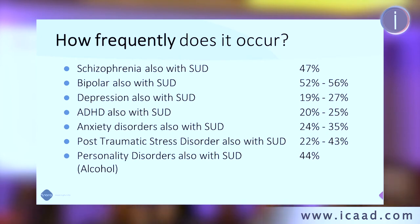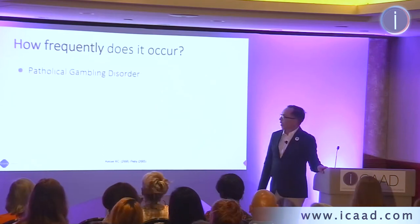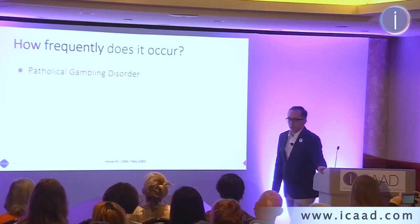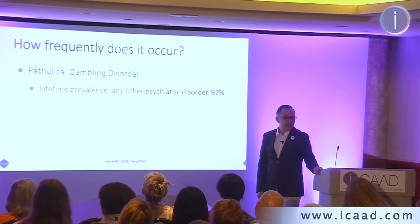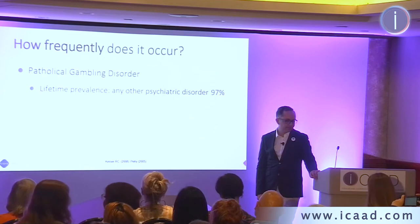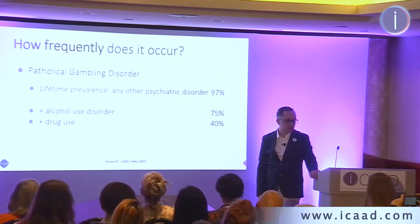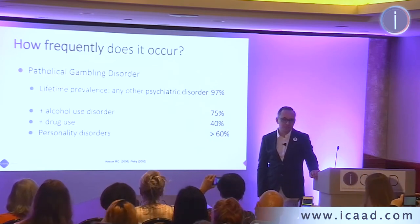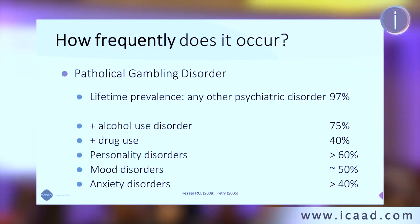What about behavioral addictions? Looking at just one example — pathological gambling disorder: the lifetime prevalence of having any other psychiatric disorder with pathological gambling is 97%. Chances of having alcohol use disorder: 75%. Drugs: 14%. Personality disorders: more than 60%. Mood: around 50%. Anxiety: more than 40%. Looking at these numbers, you see how serious the problem actually is — and most of us don't even diagnose pathological gambling disorder or internet disorders.